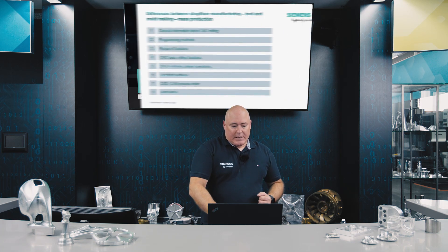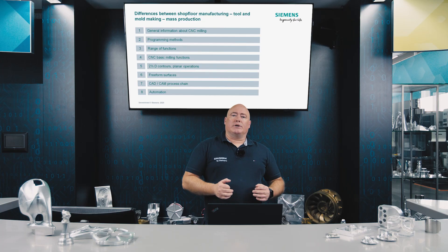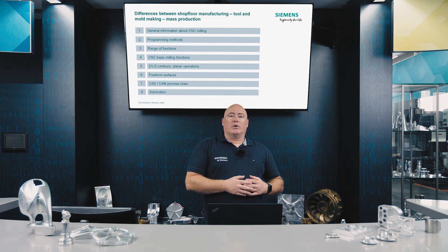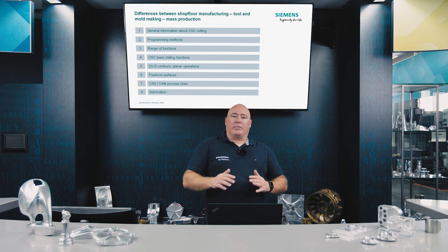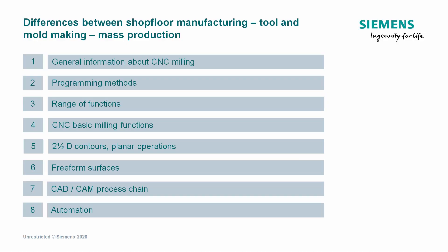We will cover job shop production, mold and die making — in other words free-form surfaces — and automation, that is, mass production. We'll start with a brief introduction to the general aspects of CNC milling, then talk about CNC programming, 2.5D contours, and generating planar surfaces for job shop-based programming. This is followed by free-form generation, mold and die applications, and finally automation and mass production.